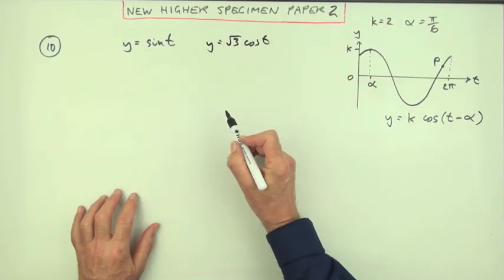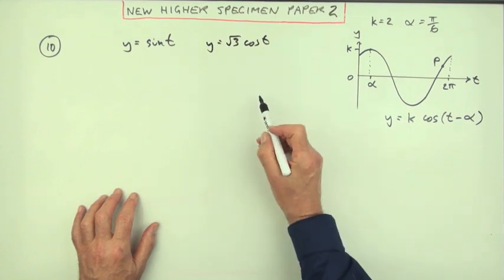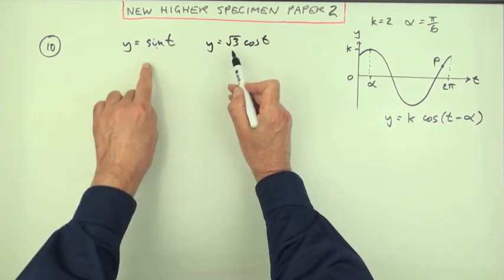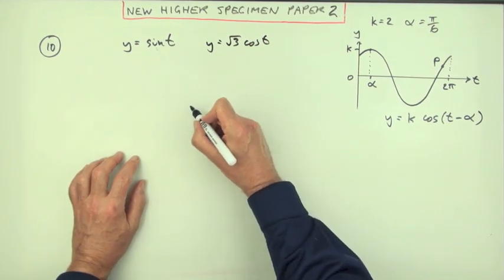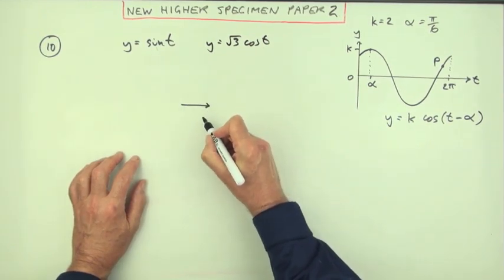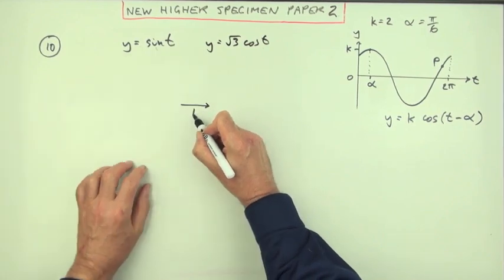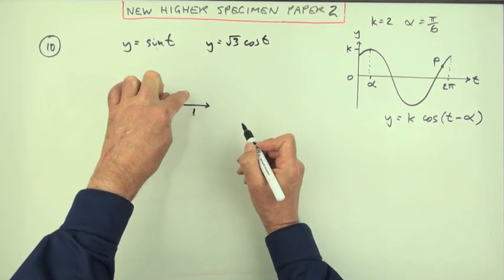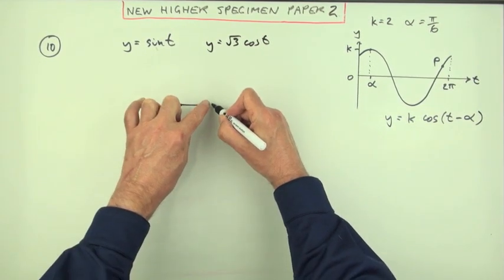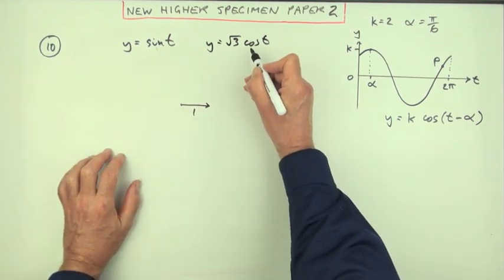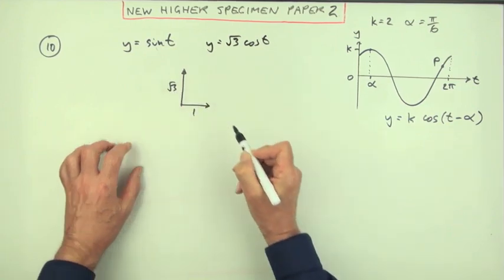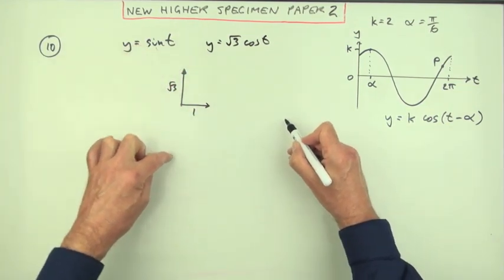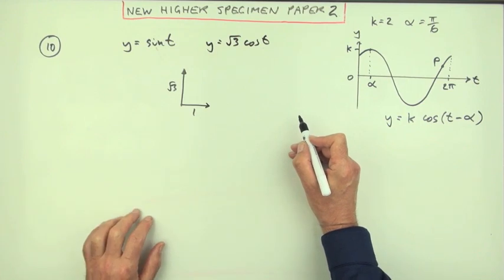Just a small point of interest before you go on to part B. The phasor's way of adding these two would be this: the sine is generated by a horizontal vector of just length 1. As that rotates, this point would generate a sine curve. The root 3 cos is generated by a vector at right angles of length root 3. As that rotates, it would generate a cosine curve of amplitude root 3.